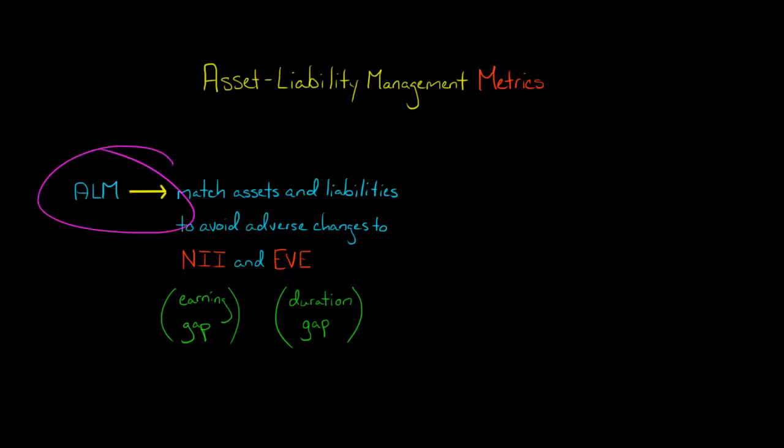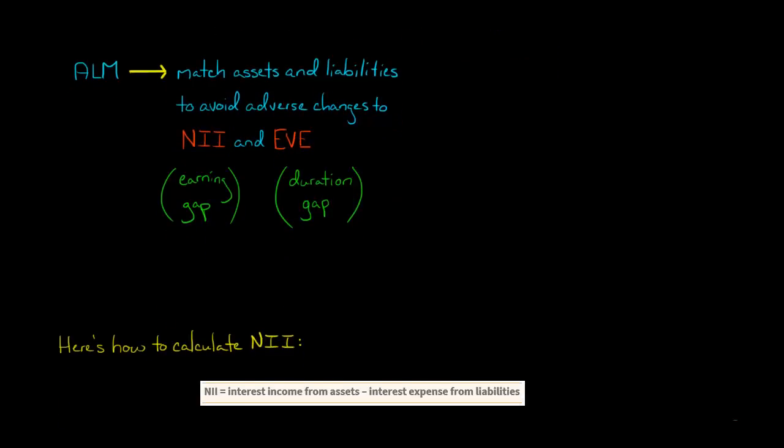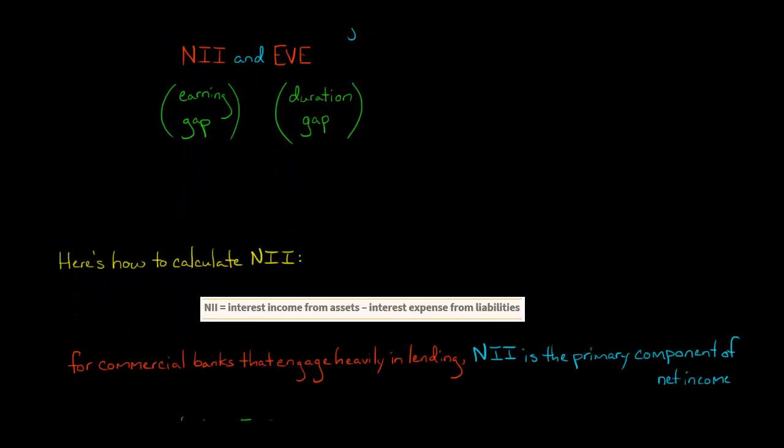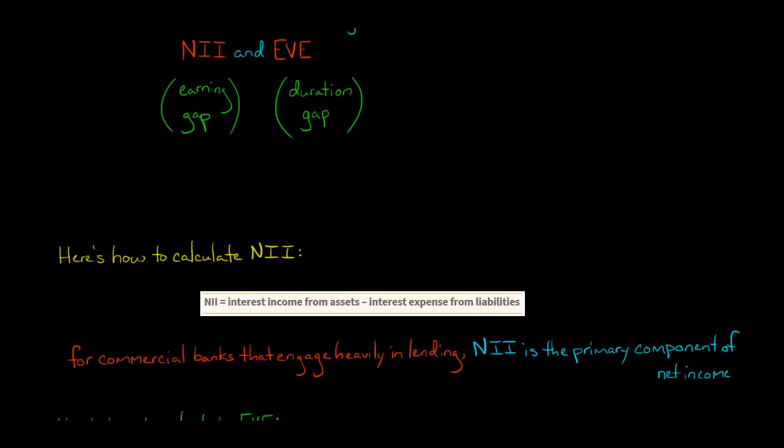So this is what we're doing with asset liability management. We're trying to avoid hits to the bank's profit and hits to the bank's economic value of its equity, the value of the firm. Net interest income and economic value of equity are two of the most important metrics in asset liability management, and we can use them to quantify the effects of interest rate risk. But let me first show you how they're calculated.